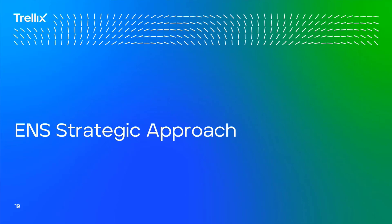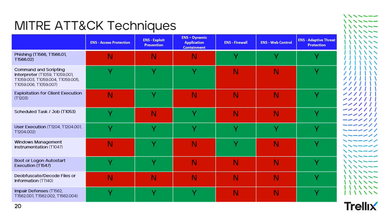Now let's look at an ENS strategic approach, mapping those MITRE techniques to ENS components that block them. For phishing: adversaries may send phishing messages to gain access to victim systems — all forms of phishing are electronically delivered social engineering attacks. Phishing can be targeted, known as spear phishing, where a specific individual, company, or industry is targeted. ENS coverage for phishing includes ENS firewall, web control, and adaptive threat protection. For command and script interpreters: adversaries may abuse interpreters to execute commands, scripts, or binaries. ENS coverage includes access protection, exploit prevention, dynamic application containment, and adaptive threat protection.